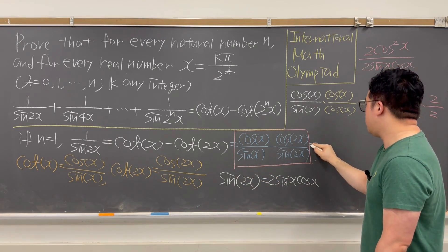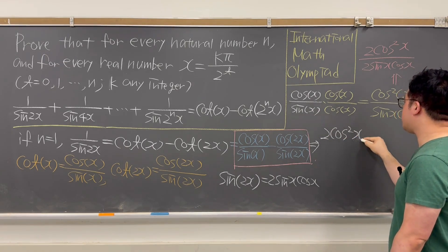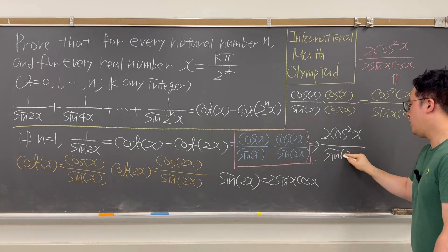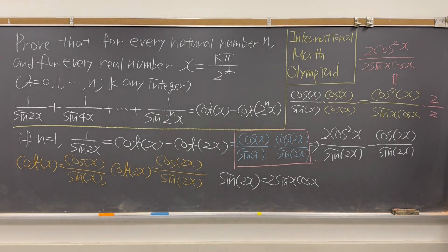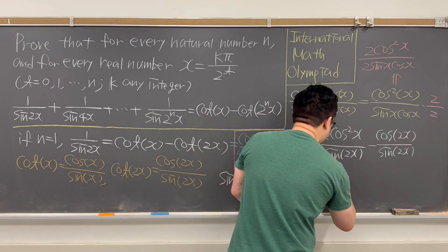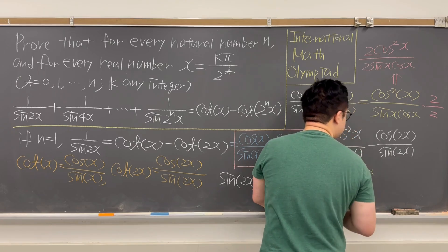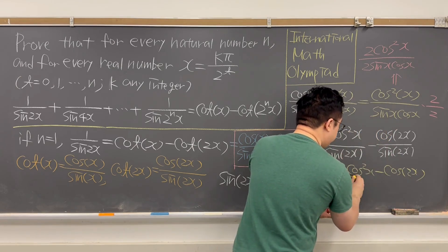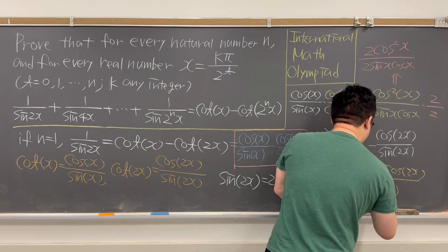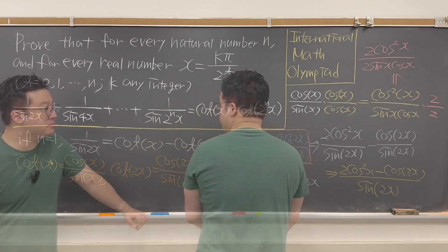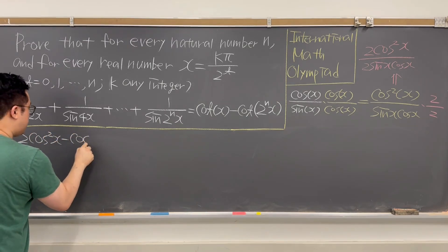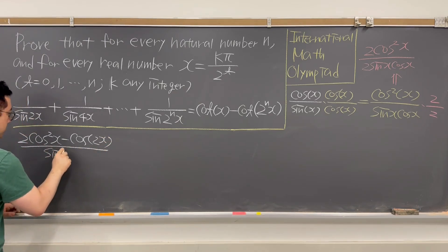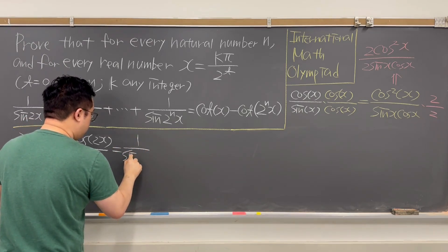So cotangent x equals 2·cos²(x) over sin(2x). Now we have a common denominator, and combining the two fractions gives us 2·cos²(x) minus cos(2x), all over sin(2x). This has to equal 1 over sin(2x).